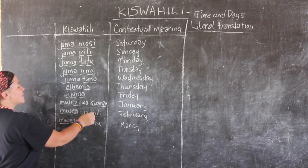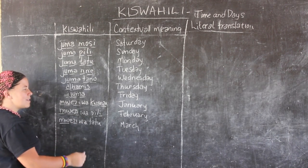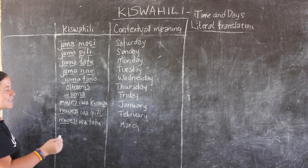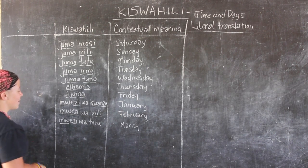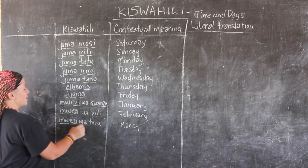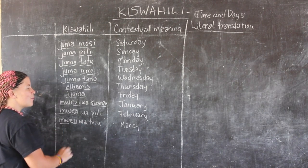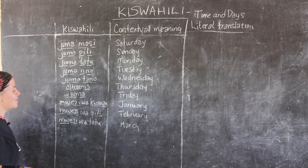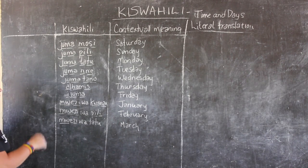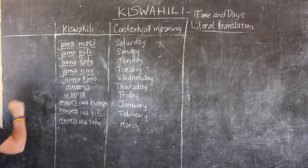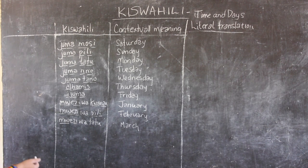After the first two, the months follow normal numbers: mwezi wa tatu, wa nne, wa tano, wa sita, wa saba, and so on. So if you practice your numbers, the months will come easily. Mwezi wa nne is the fourth month, mwezi wa tano is the fifth month, and so on. Practice your numbers to get comfortable with both the months and the days of the week — it makes it quite easy and straightforward.